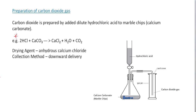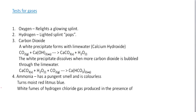So we've looked at the preparation of oxygen gas, ammonia gas, and carbon dioxide. You need to remember the reagents, the drying agents, and the method of collection for each gas. Now, how do we test for gases?